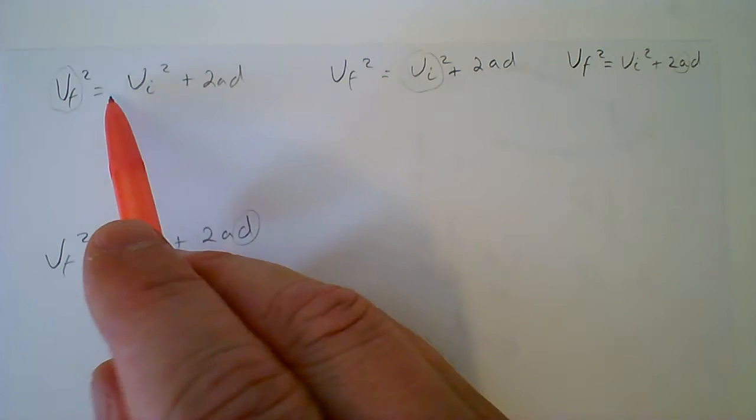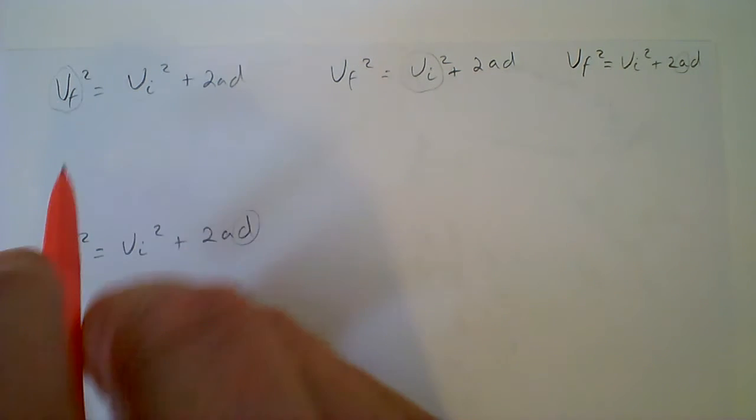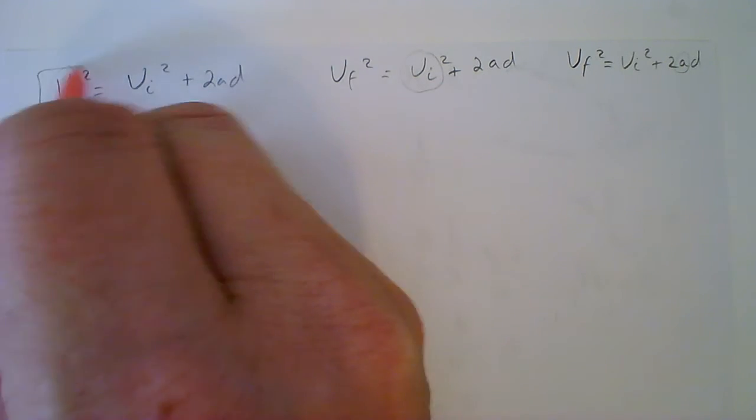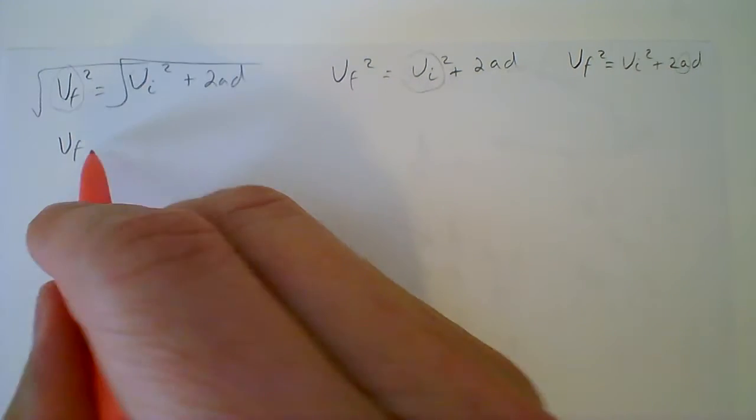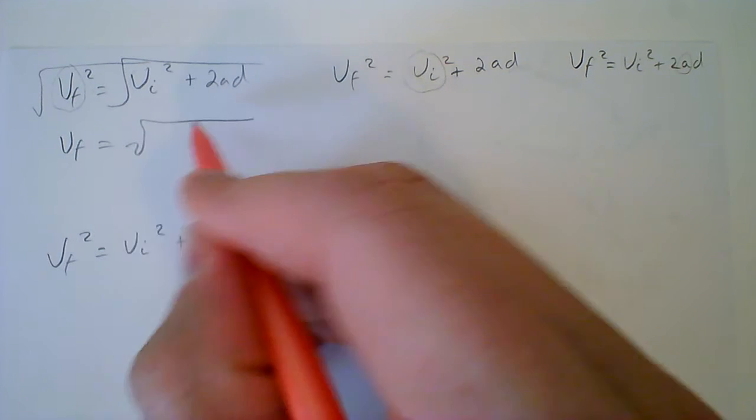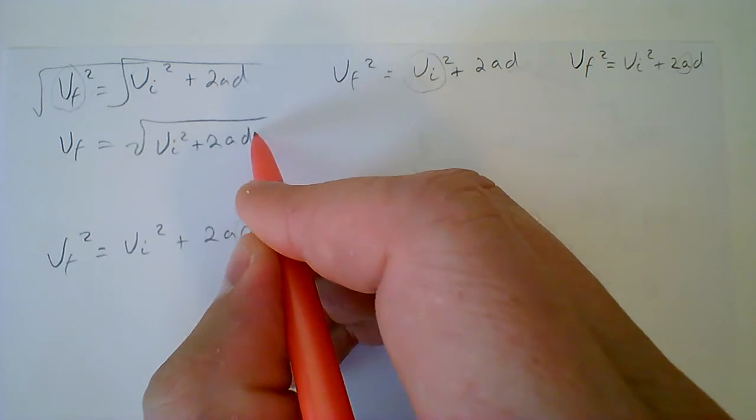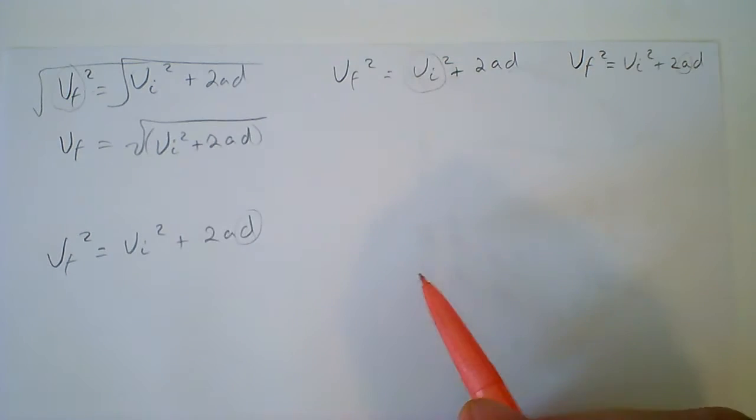In order to rearrange the VF squared equals VI squared plus 2AD equation for VF, if we were trying to isolate VF, all we do is take the square root of both sides. And when we do that, VF equals square root of VI squared plus 2AD. All of that is going to be underneath the square root.